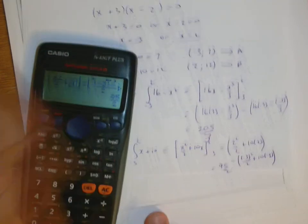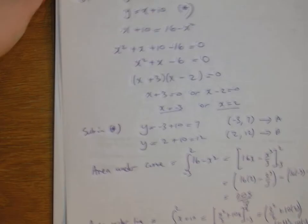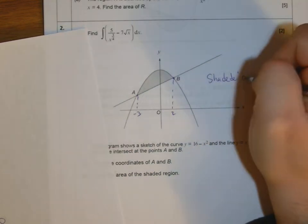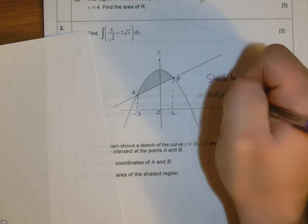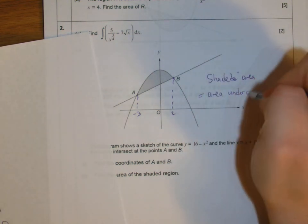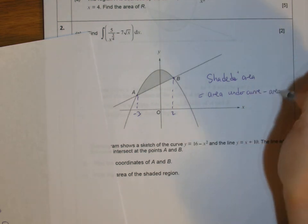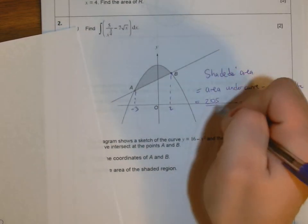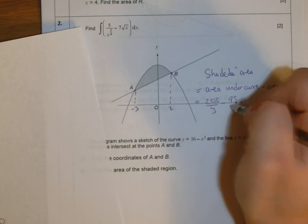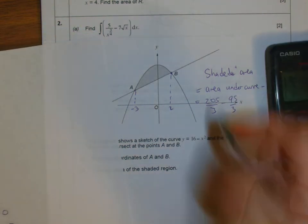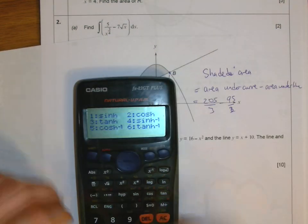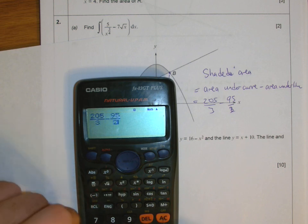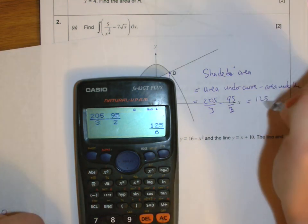To get the shaded area, we subtract the area under the line from the area under the curve. Shaded area equals area under the curve, 205 over 3, take away area under the line, 95 over 2. The answer is 125 over 6.